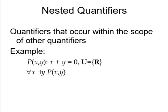Nested quantifiers are basically a kind of quantifier. For example, if we have a quantifier case, then we have a nested quantifier. For example, if we have quantifier P of x,y, then we have x plus y equal to zero statement. We have universal domain and we have real numbers. For all x, there exists a y. This means that in this x domain we have a variable or a quantity y. We have a nested quantifier.